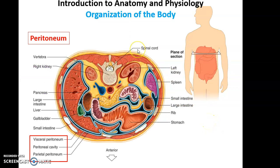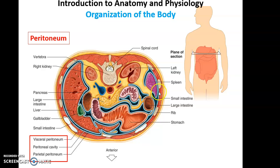There is a fourth serous membrane important for our body called the peritoneum. The peritoneum is found within the abdominal cavity and wraps around a variety of organs or parts of some organs — for instance, the liver, parts of the small intestine, the large intestine, and the stomach. The peritoneum also has two layers: the visceral layer lying on the surface of the organs, and the parietal layer adjacent to the surrounding structure, with a thin cavity filled with serous fluid.